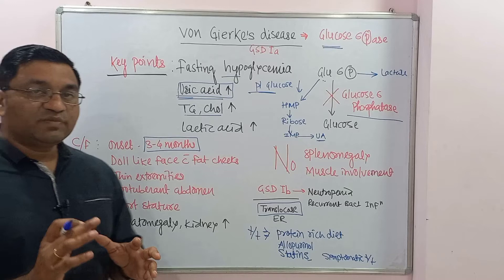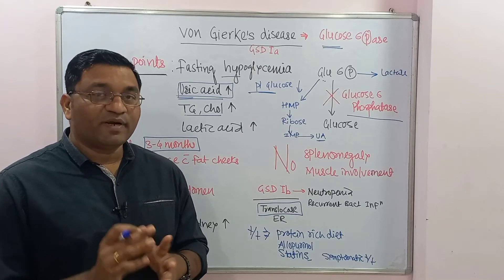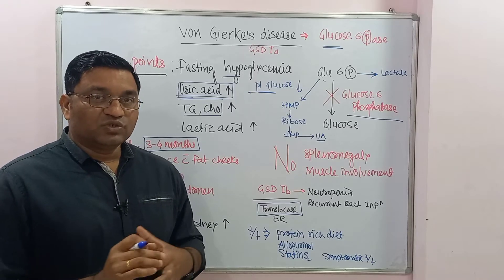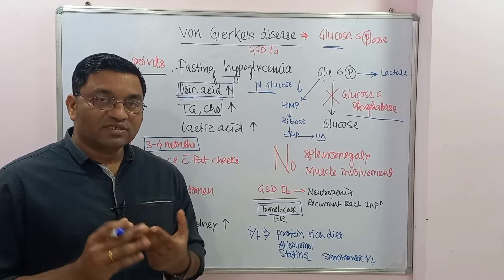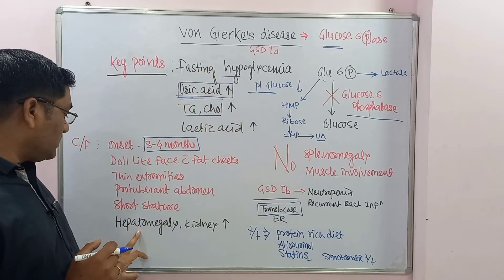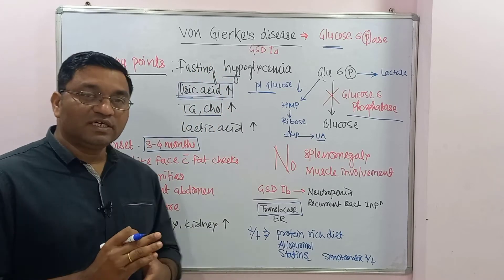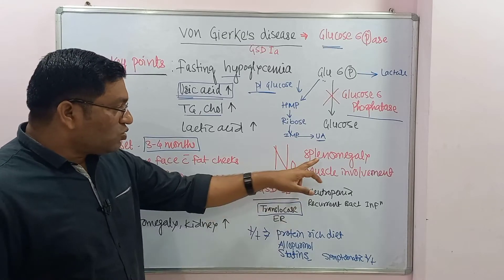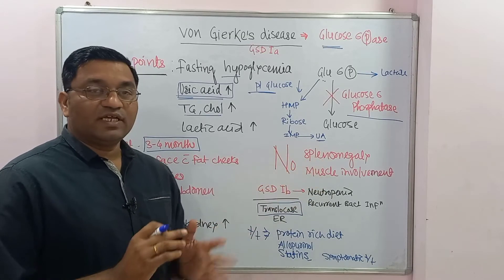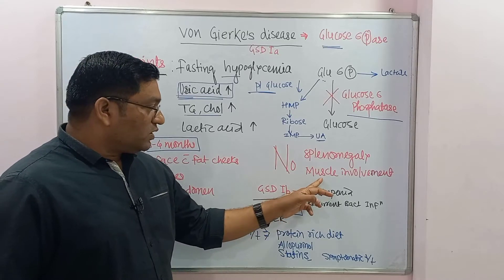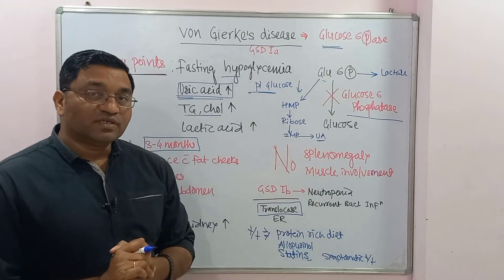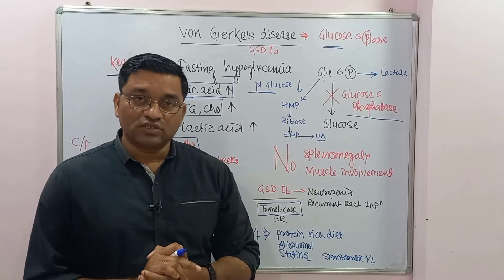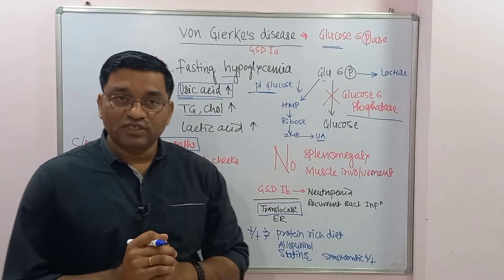It principally involves the liver, so hepatomegaly is present, and there is also enlargement of the kidneys. Three organs are involved: the liver, the kidney, and the intestinal mucosal cells. There is no splenomegaly and no muscle involvement, because there is no glucose-6-phosphatase enzyme in the muscle. That is why muscle involvement is not seen. This is a liver glycogen storage disorder.